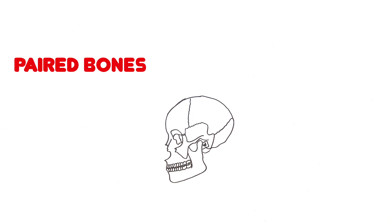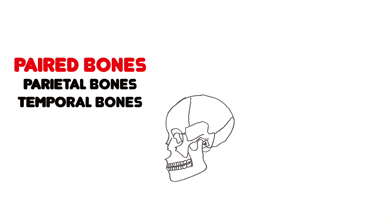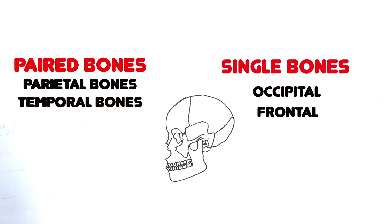The paired bones are the two temporal and the two parietal bones. Single bones are the occipital, frontal, ethmoid, and the sphenoid bone. Let's discuss each bone separately.